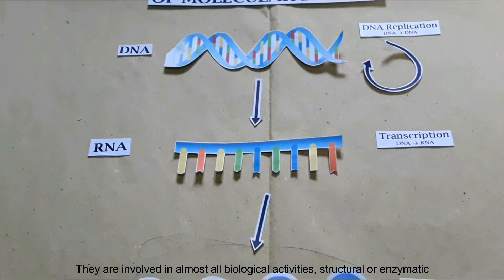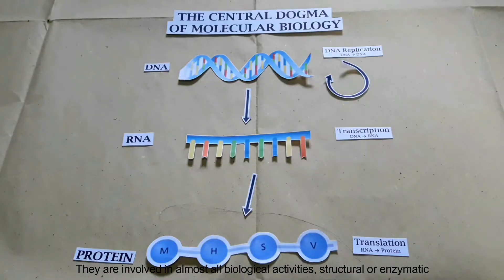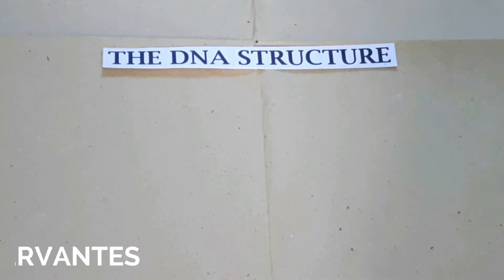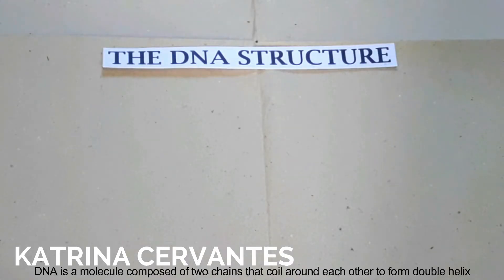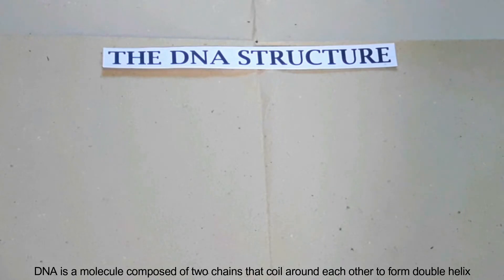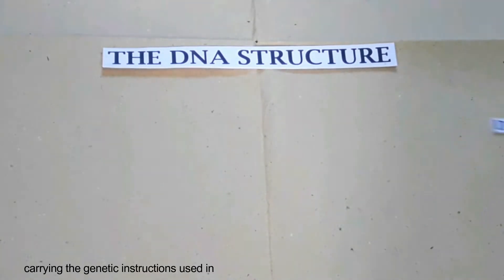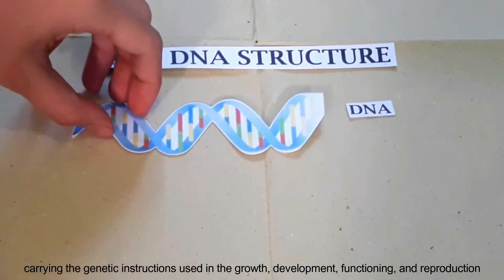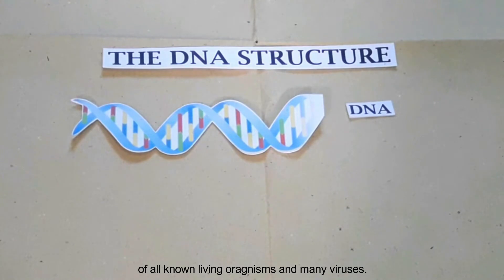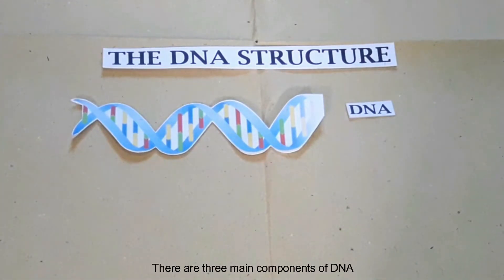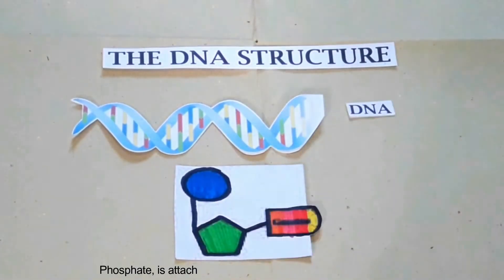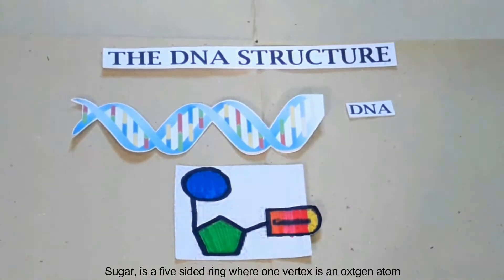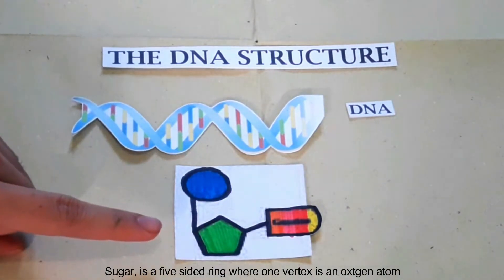Proteins are involved in almost all biological activities, structural or enzymatic. DNA is a molecule composed of two chains that curl around each other to form a double helix, carrying the genetic instructions for the growth, development, functioning, and reproduction of all known living organisms and many viruses. There are three main components of DNA: phosphate, which is attached to the fifth carbon of the sugar molecule; sugar, which is a five-sided ring where one vertex is an oxygen atom.